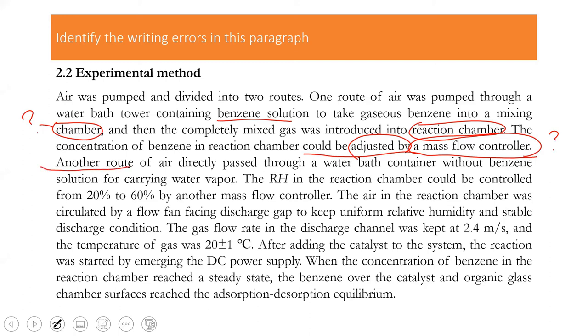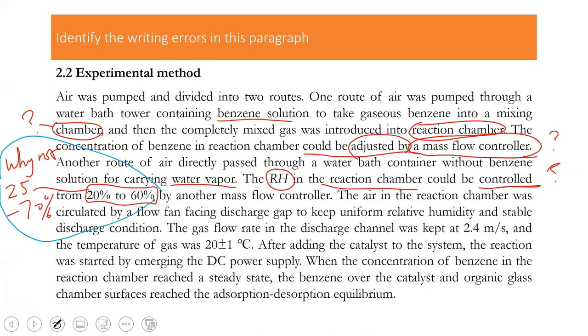Another route. Again, we have no idea how the other route is set. Carrying water vapor. How come there's water vapor? This is the relative humidity in the reaction chamber could be controlled. Then, how? From 20 to 60. Why 20 to 60? Why not 25 to 70? My point here is you give a number. You choose this parameter. There must be something going on in your mind. You cannot hide that information. You must tell your readers how you end up with numbers like this. Remember that 30 seconds in the previous example.